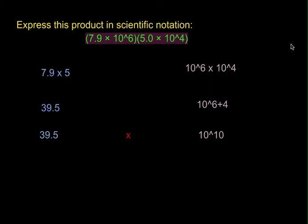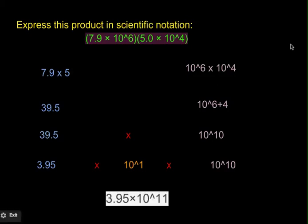But remember, you can only have one number to the left of the decimal point when in scientific notation. So you have 3.95 times 10 to the first, because that is what would equal 39.5. Overall now, you have 3.95 times 10 to the first, times 10 to the tenth. Once again, you must add the exponents, which would be 1 and 10. So now you have 3.95 times 10 to the eleventh. And that is the answer to question number one.